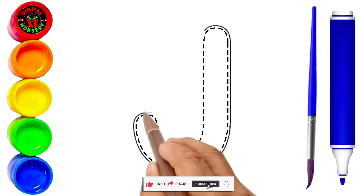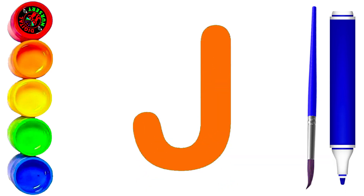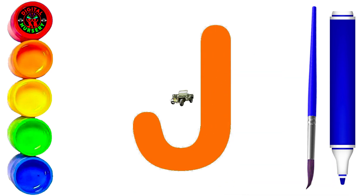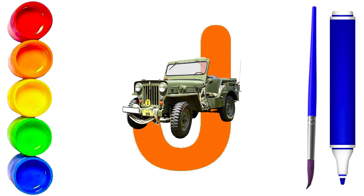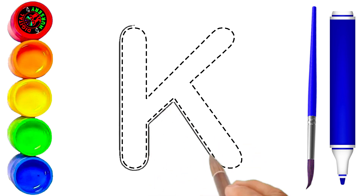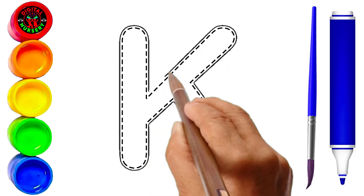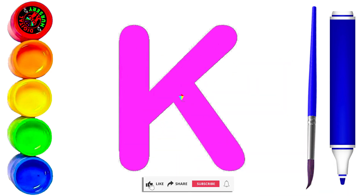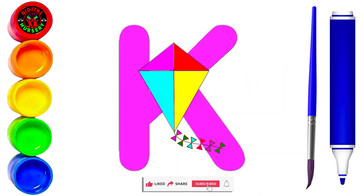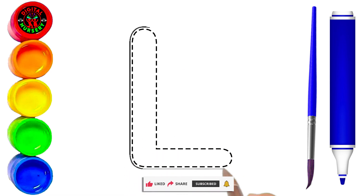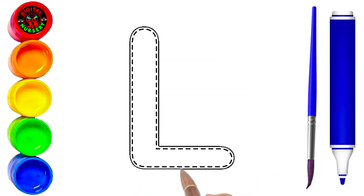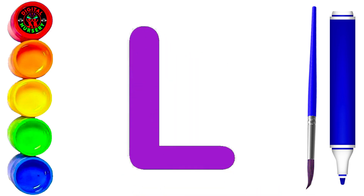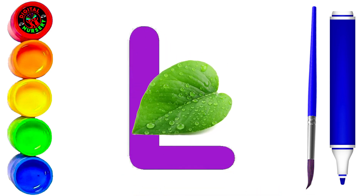J. We are tracing capital J letter by orange color. Yes, orange color of capital J. Wonderful. J is for jeep. K. We are tracing capital K letter by pink color. Yes, pink color of capital K. Nice. K is for kite. L. We are tracing capital L letter by purple color. Yes, purple color of capital L. Wow, you are a smart learner. L is for leaf.